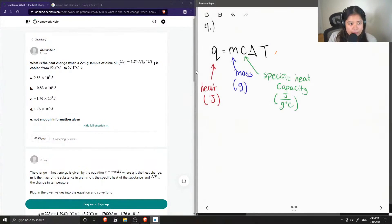And finally, delta T is the change in temperature. So delta T is equal to T final minus T initial.